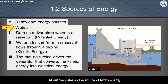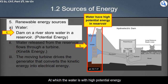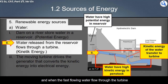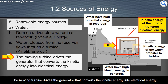For hydro energy, a hydroelectric dam is built at the downstream of a river. The dam stores water in a reservoir at high potential energy. When water is released from the reservoir, it gains high kinetic energy — this is potential energy converting to kinetic energy. The fast-flowing water flows through a turbine, transferring kinetic energy to the turbine. The moving turbine then drives a generator that converts the kinetic energy into electrical energy.